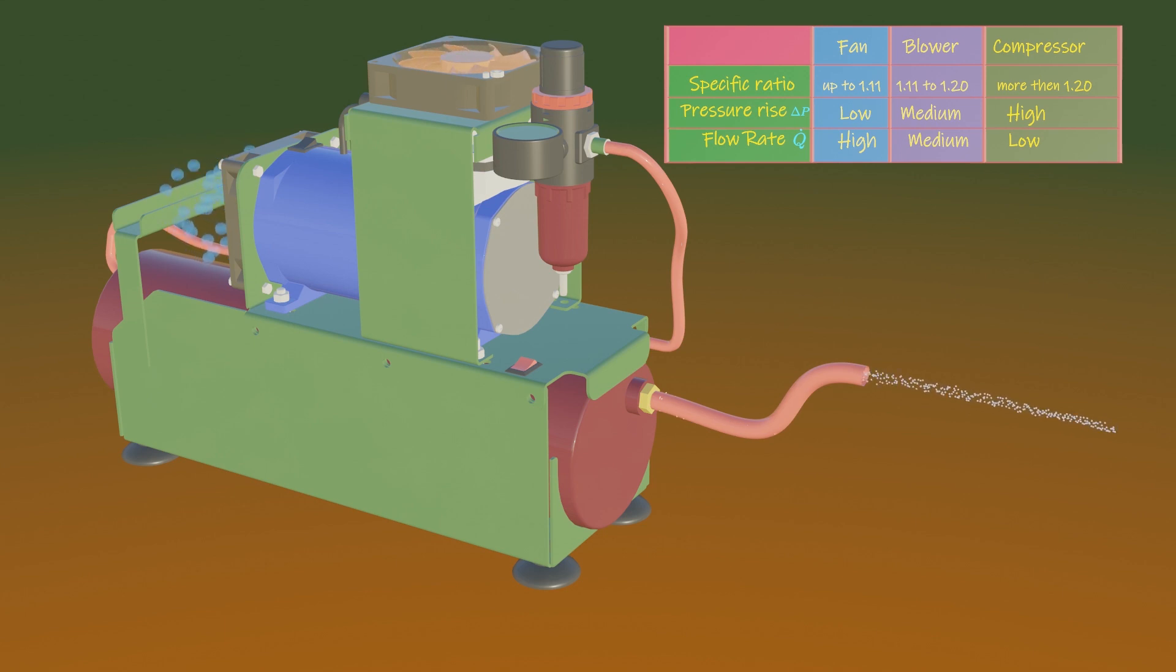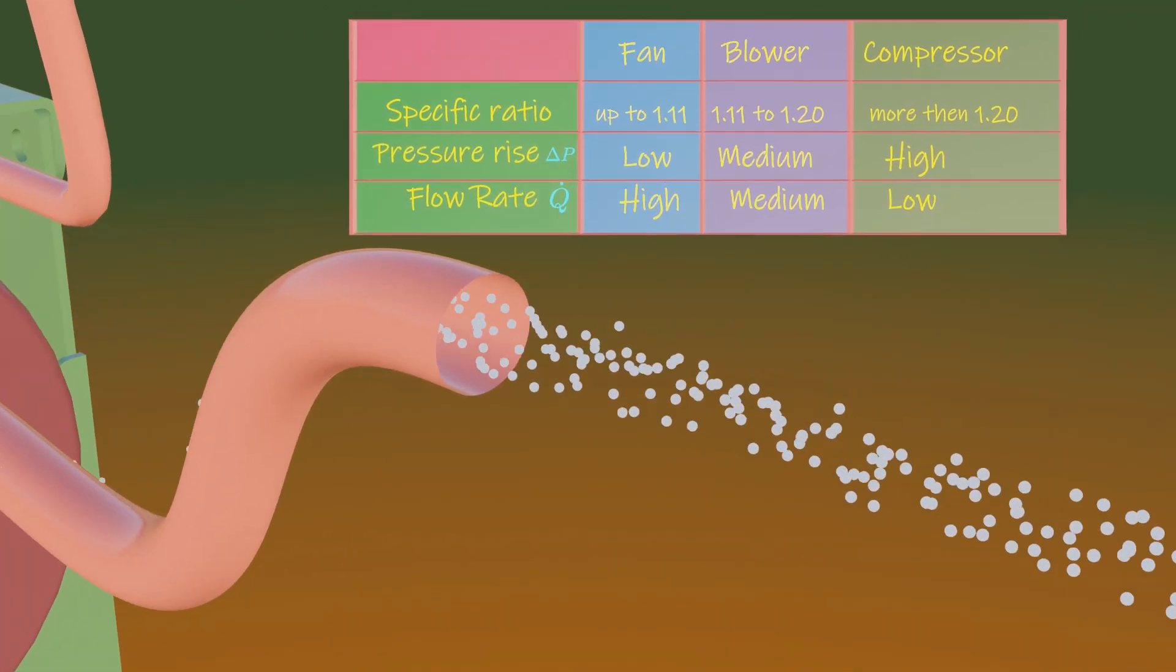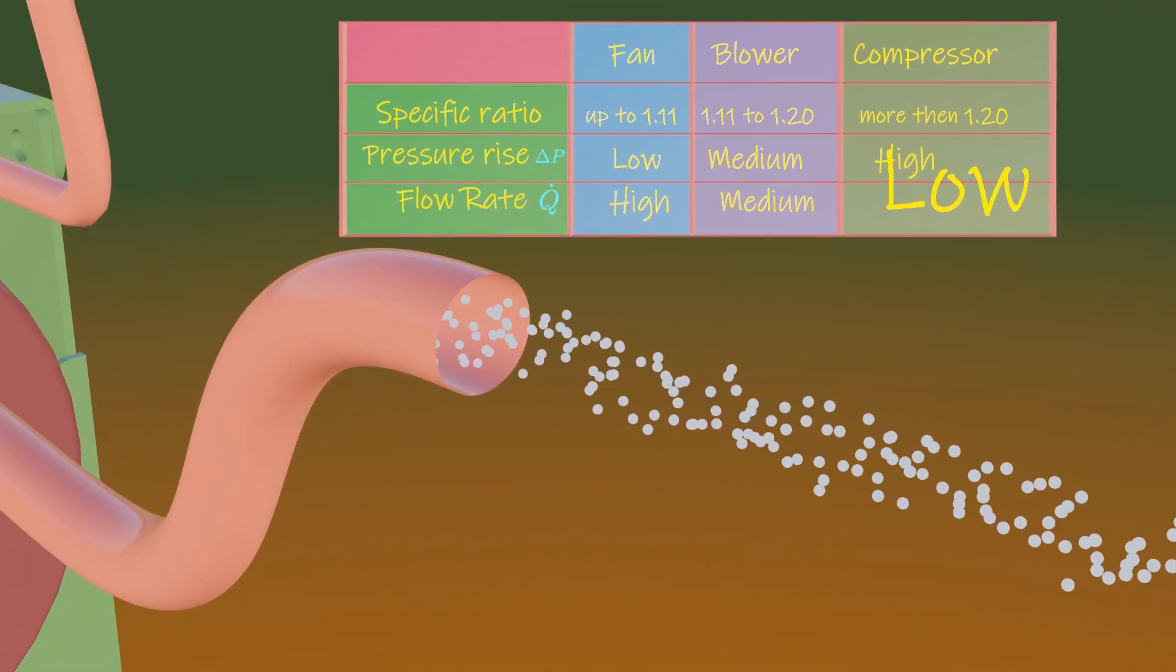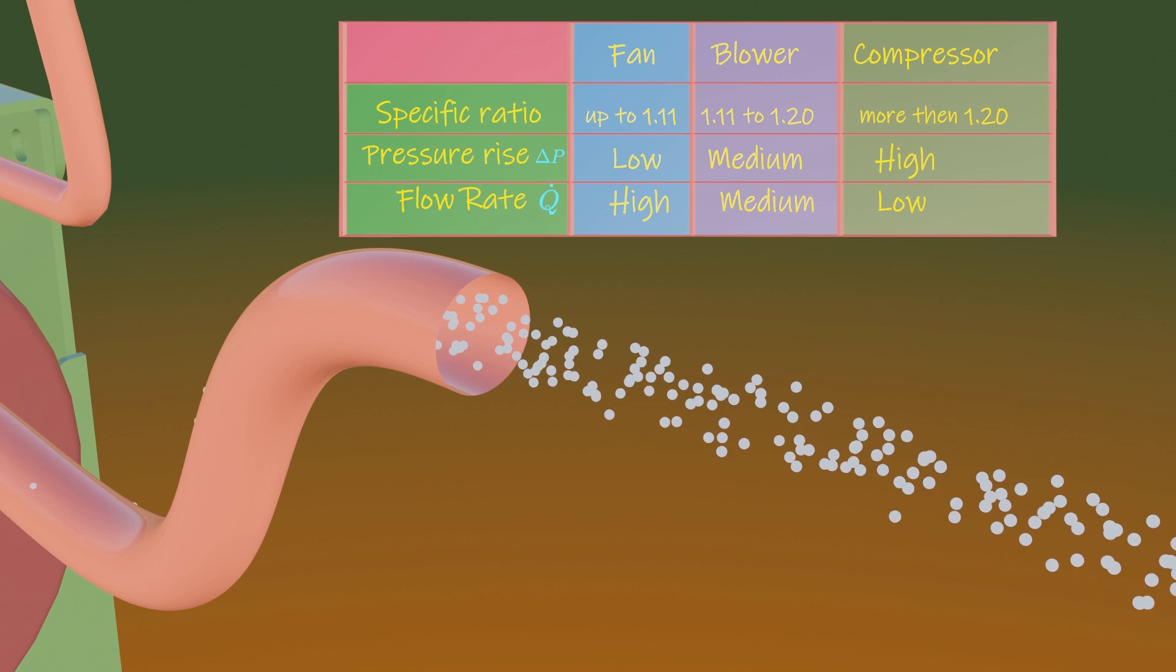In fact, the purpose of a compressor is more to increase the pressure of the gas, rather than move a large amount of gas. The volumetric flow rates are typically viewed as relatively small compared to a cooling fan or furnace blower.